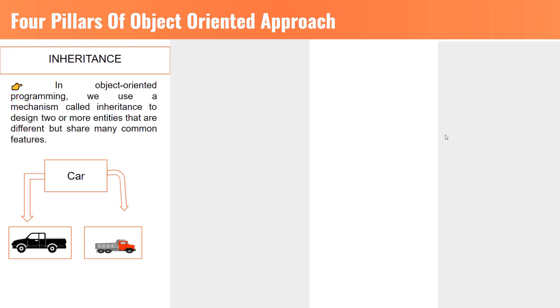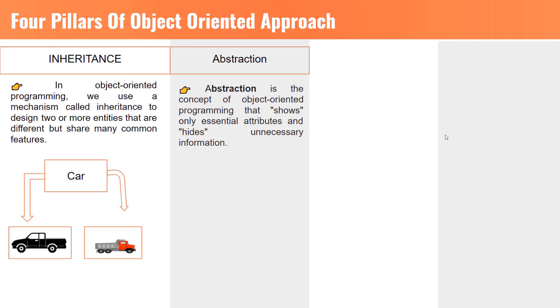The second pillar of object-oriented approach is called abstraction. Abstraction is the concept of object-oriented programming that shows only essential attributes and hides unnecessary information. The main purpose of abstraction is hiding the unnecessary details from the users. Abstraction is selecting data from a larger pool to show only relevant details of the object to the user. It helps in reducing programming complexity and effort. It is one of the most important concepts of OOPS, which is object-oriented programming.